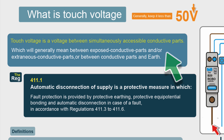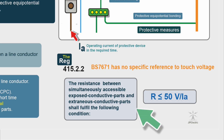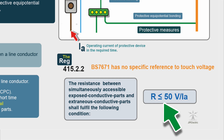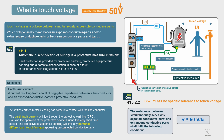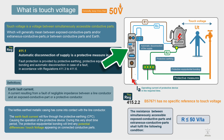Generally you want to keep any touch voltage below 50 volts. BS 7671 has no specific reference to touch voltage, but it does state that the resistance between simultaneously accessible exposed conductive parts and extraneous conductive parts shall fulfil the condition: resistance is less than 50 volts divided by Ia, where Ia is the operating current of the protective device. This is often used in special locations to check that the circuit resistance won't slow down disconnection times. Disconnection time is crucial — 0.4 of a second for TN systems, 0.2 of a second for TT systems.